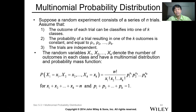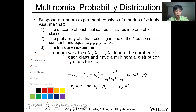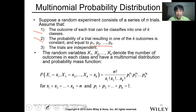Suppose that a random experiment consists of a series of n trials. Assume that: number one, the outcome of each trial can be classified into one of k classes; number two, the probability of a trial resulting in one of the k outcomes is constant and equal to p1 to pk for each trial, and the trials are independent.